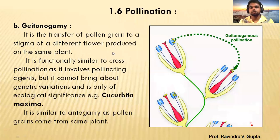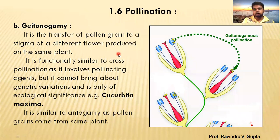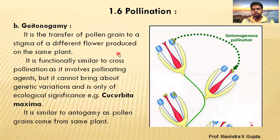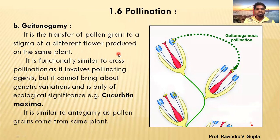We are starting with 1.6 pollination, specifically the types of pollination. In the last lecture we covered the first type, autogamy, and the different adaptations in plants like chasmogamous flowers, bisexuality, and cleistogamous flowers. That topic has been completed.